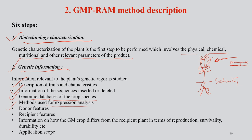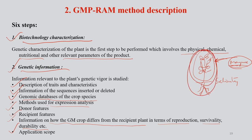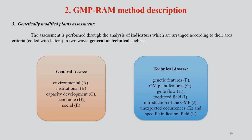Recipient features means information on this rice plant — how the GM crop differs from the recipient plant in terms of reproduction, survivability, durability, etc. — a comparative assessment. Application scope means if you develop this kind of salt tolerant rice plant, its application can certainly be applied in areas where salt intrusion occurs. The third step is genetically modified plants assessment.